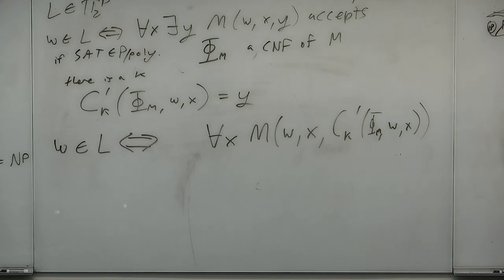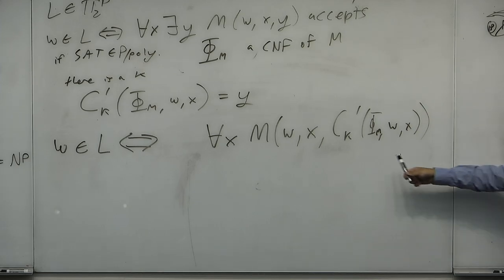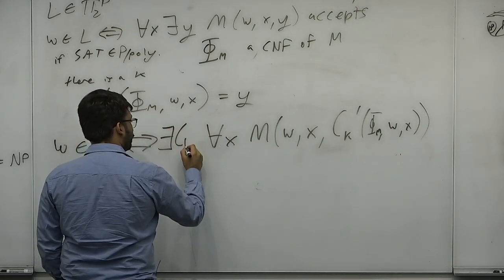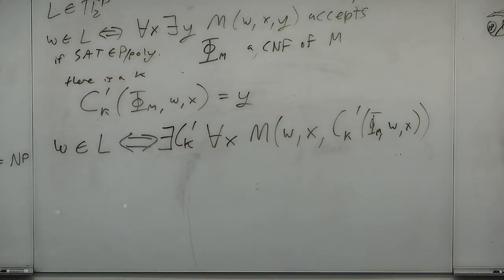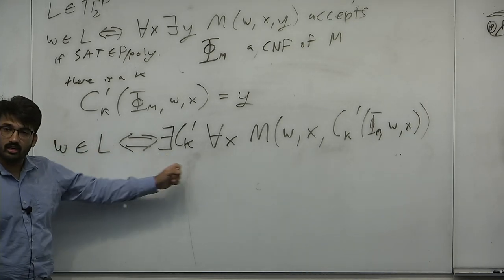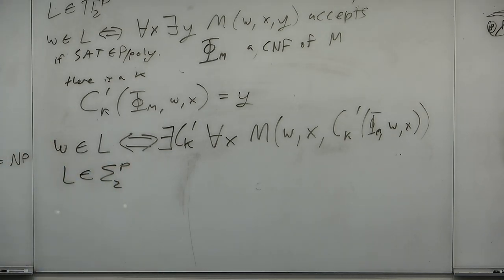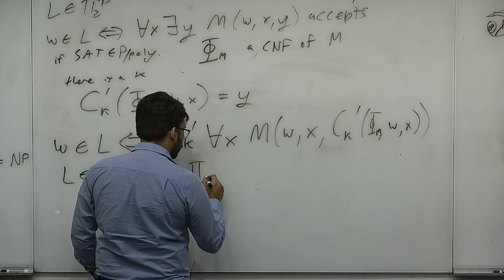There's one small part missing: we don't know what the circuit is. We're going to non-deterministically guess the circuit that performs our witness extraction. It must exist because SAT is in P/poly. Then we use that to extract Y without quantifying over Y — but now we quantify over the circuit. This gives an Exists-For-All statement: W is in L iff exists circuit, for all x. So L is in Sigma-2-P. Pi-2 ⊆ Sigma-2. QED.